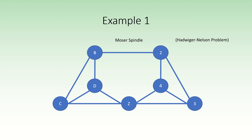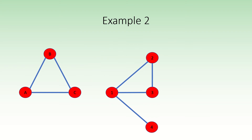Moving on, let's tackle another example, this time with graphs that are not identical. Suppose these are our two graphs. Again, we must choose two edges to apply the Hayosh construction. Let's pick cb and one, two.